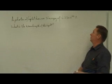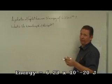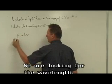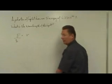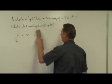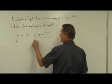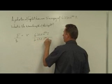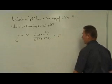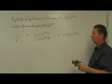A photon of light has an energy of 6.23 times 10 to the negative 20 joules. What is the wavelength of the light? Let's solve for frequency first, since it's slightly easier. Energy equals Planck's constant times frequency, so dividing both sides by Planck's constant gives frequency. That is 6.23 times 10 to the negative 20 joules divided by 6.63 times 10 to the negative 34 joule seconds, which gives 9.4 times 10 to the 13 hertz.